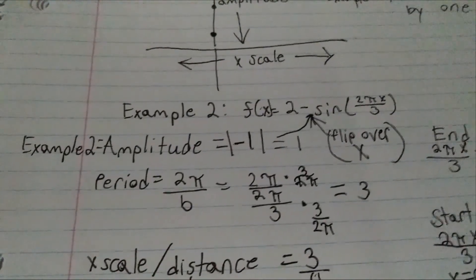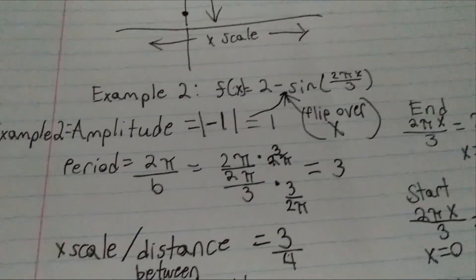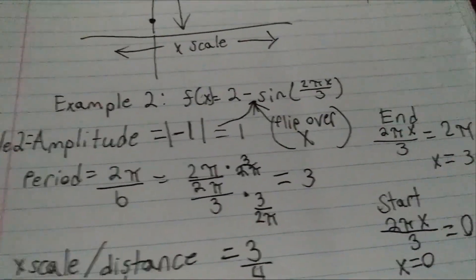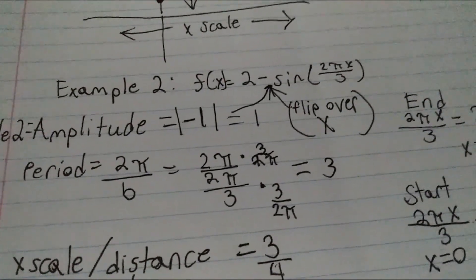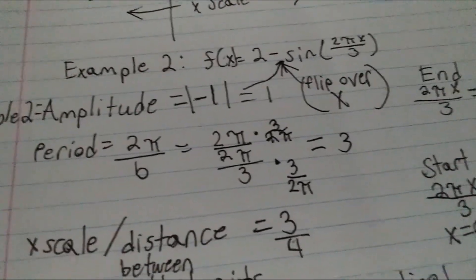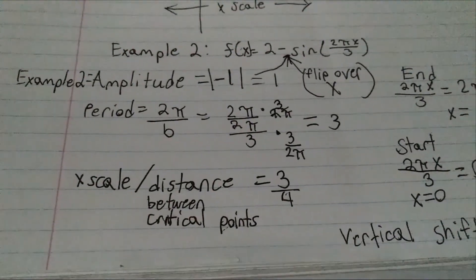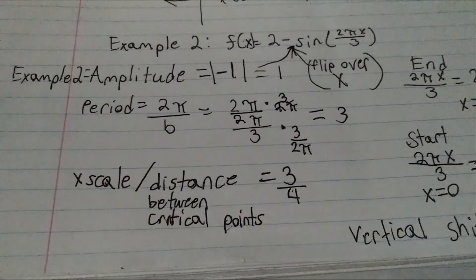The period 2 pi over b is still going to be the same. In this example, we have 2 pi over 3. So, 2 pi divided by 2 pi over 3, which to simplify, you just multiply by 3 over 2 pi on each side and get 3. Our x scale, or distance between the critical points, is going to be 3 divided by 4.